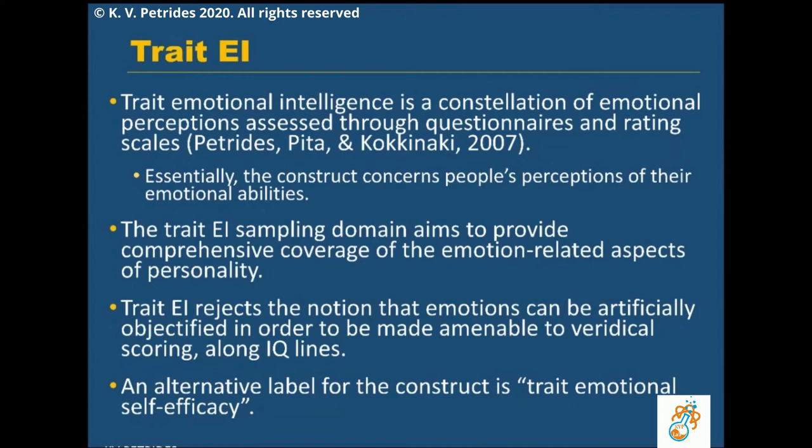The trait EI sampling domain aims to provide comprehensive coverage of the emotion-related aspects of personality. Personality is a vast domain — it includes things like values, goals, and interests — and the trait EI sampling domain aims specifically to cover the emotion-related aspects of personality and integrate them into an autonomous system.